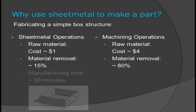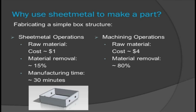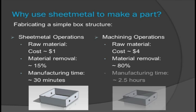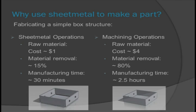The entire sheet metal process, including time to lay out the part, make cuts, punch holes, bend to the final shape, and weld the corners, takes approximately half an hour. A comparable part would require several hours to produce on a milling machine because of the amount of material which must be removed from the center of the part.